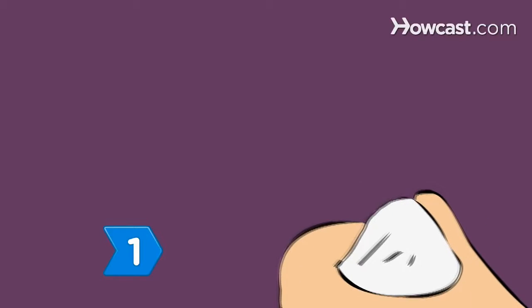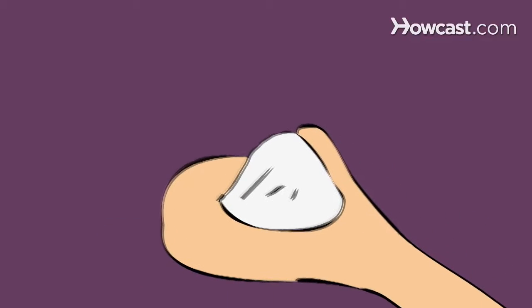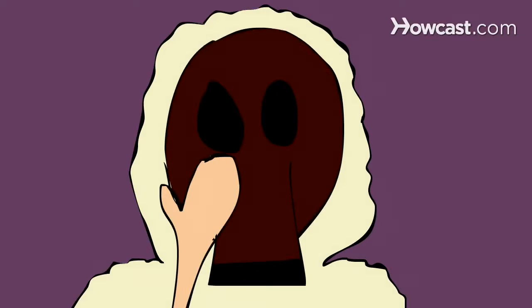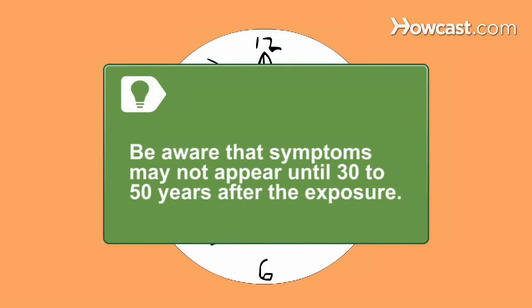Step 1. Assess your level of risk. Mesothelioma usually presents symptoms in people who have been exposed to asbestos over long periods of time. Be aware that mesothelioma symptoms may not appear until 30 to 50 years after the exposure.